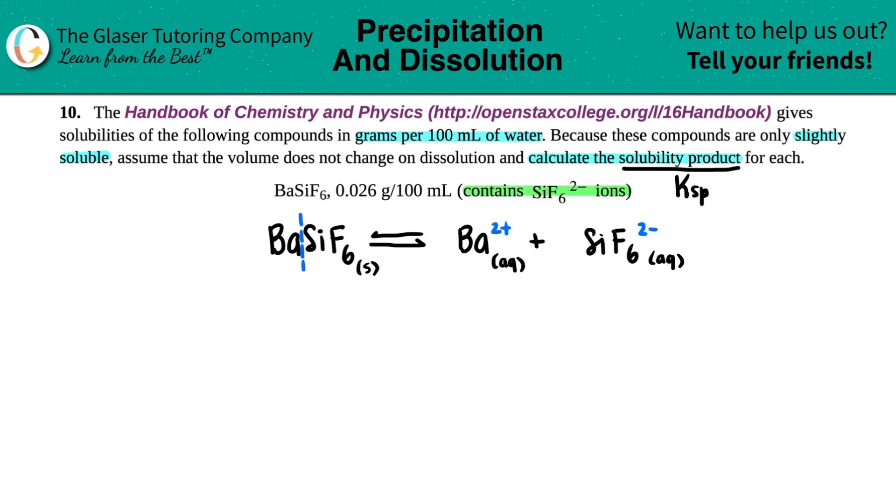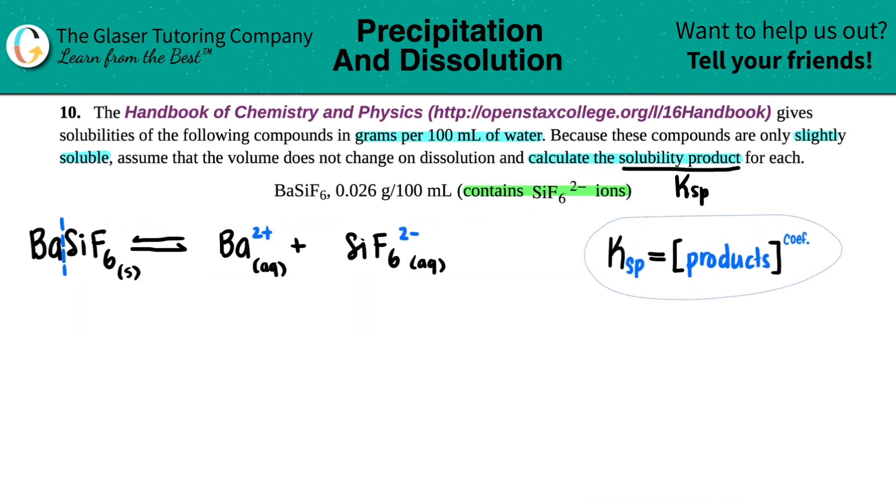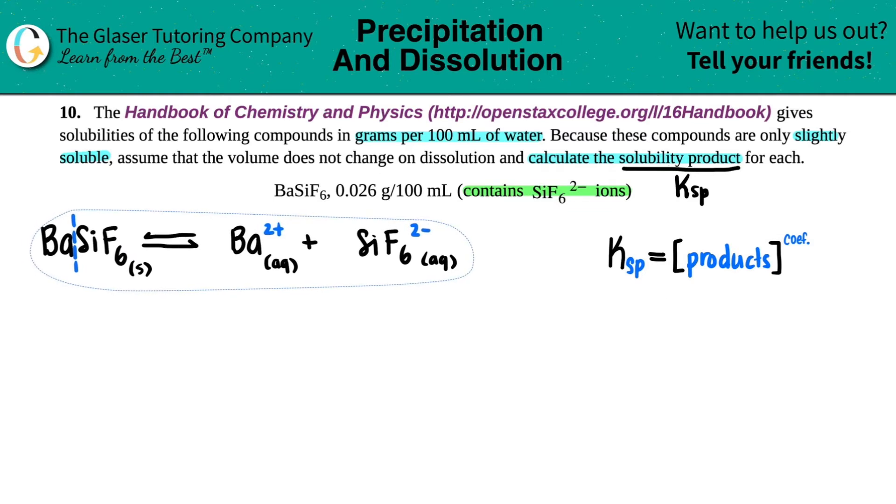Now let's write out the general Ksp formula. The general Ksp formula is equal to the concentration of the products raised to the coefficients. Now just make sure, is this equation balanced? Yes it is. I have one barium, one barium. I have one SiF6, one SiF6. Now let's write that expression.